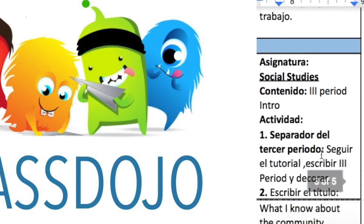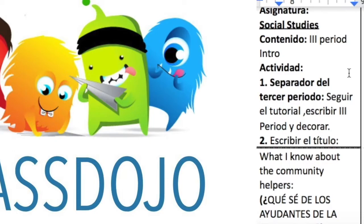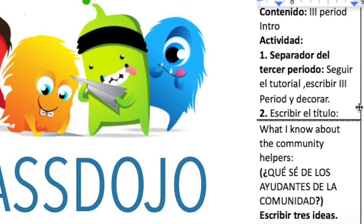La siguiente asignatura va a ser Social Studies en English. Recuerden que vamos a hacer el separador, ya les mostramos el tutorial el día de ayer. Lo decoran, escriben la fecha, que va el periodo desde el día de ayer, marzo 19 a junio 12.